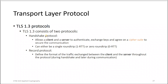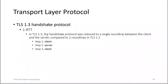TLS consists of two protocols: the handshake protocol and the record protocol. The handshake protocol allows client and server to authenticate, exchange keys, and agree on a cipher suite to secure communication. It can be either a single round trip or a zero round trip. The record protocol defines the format of traffic exchanged between client and server throughout the protocol — during the handshake and later during communication.